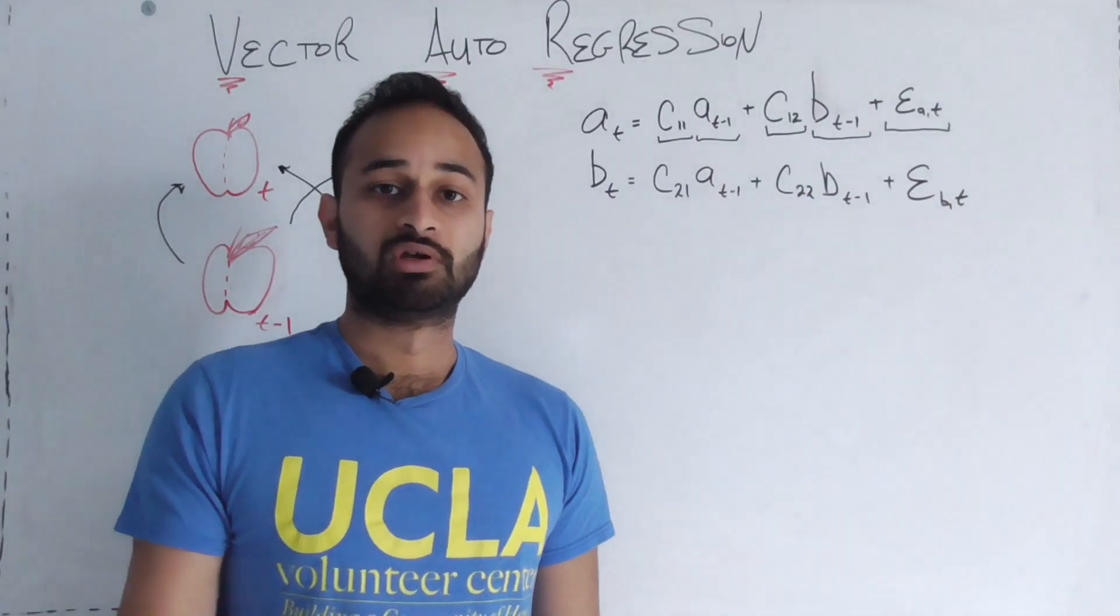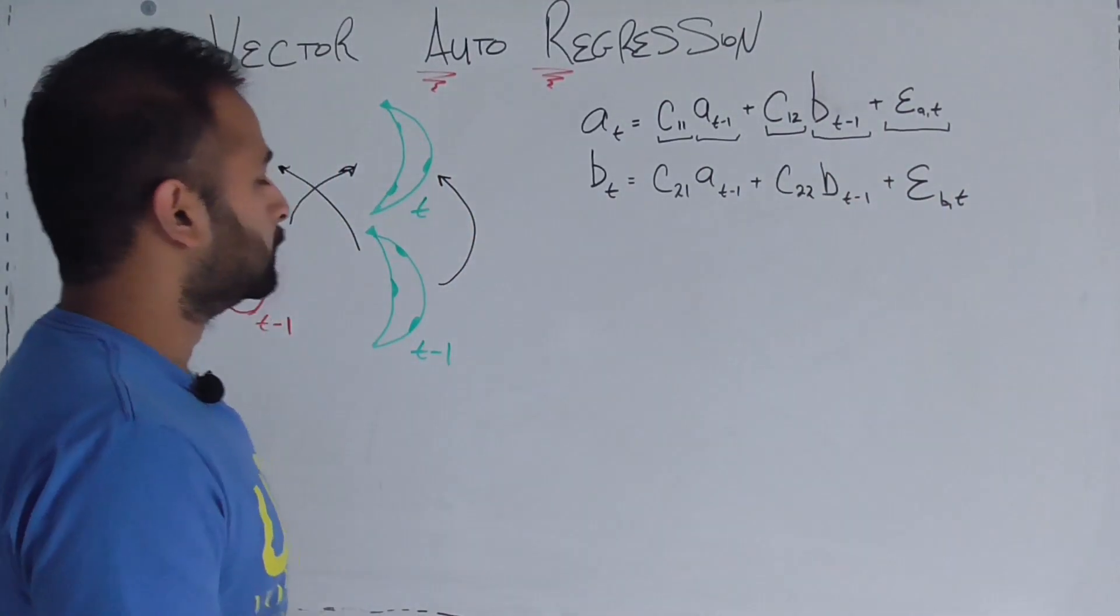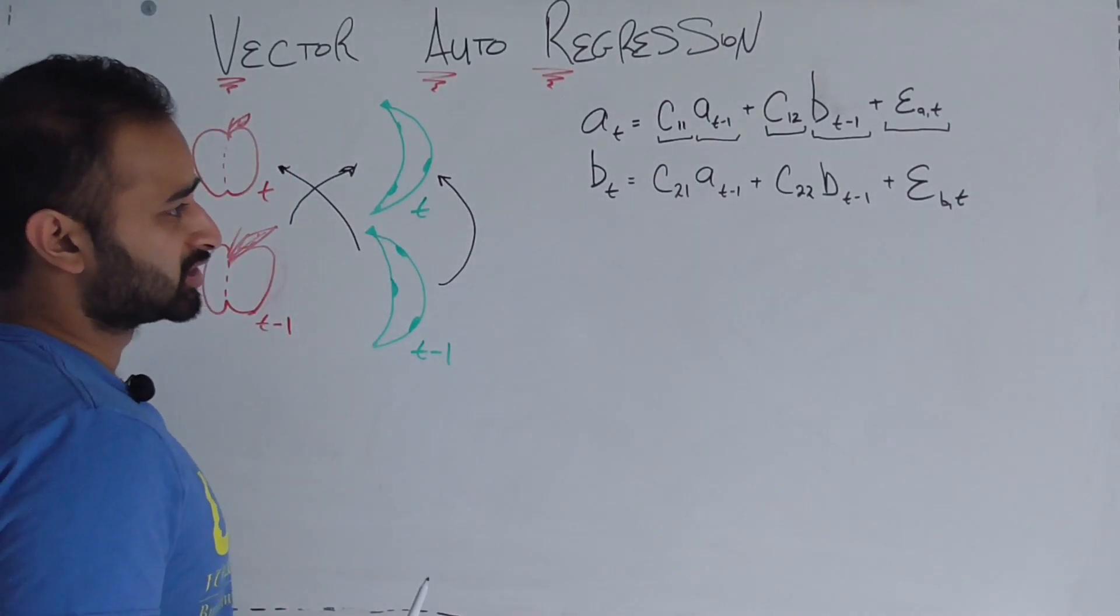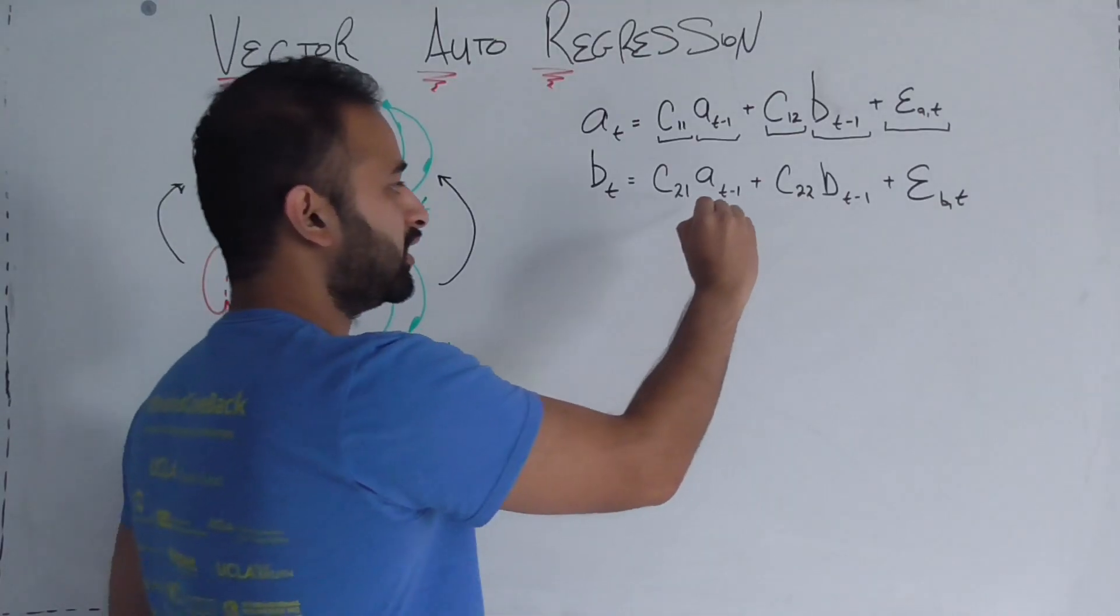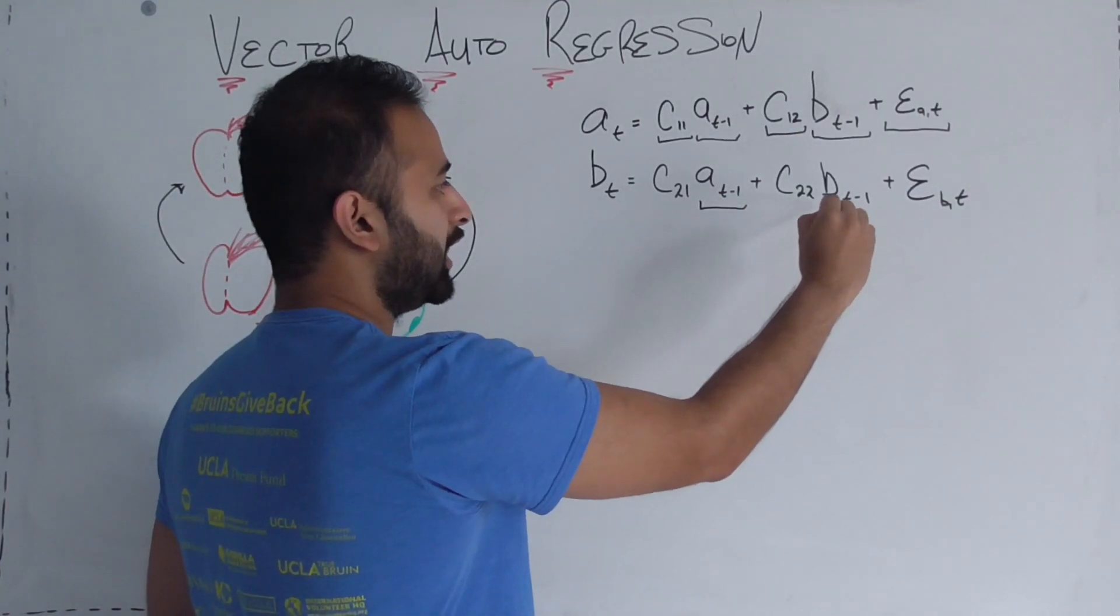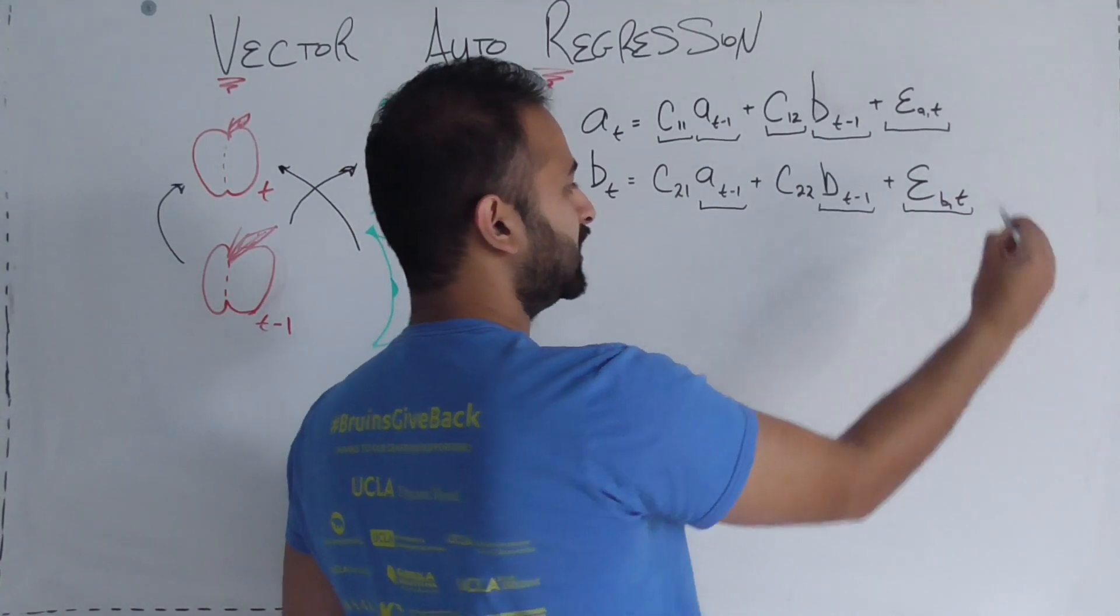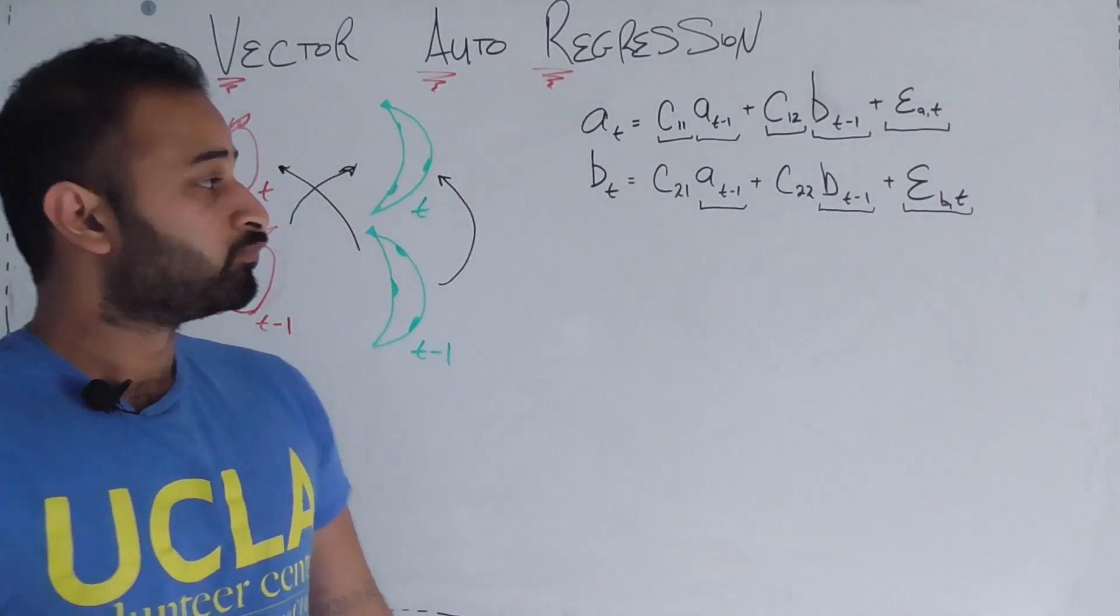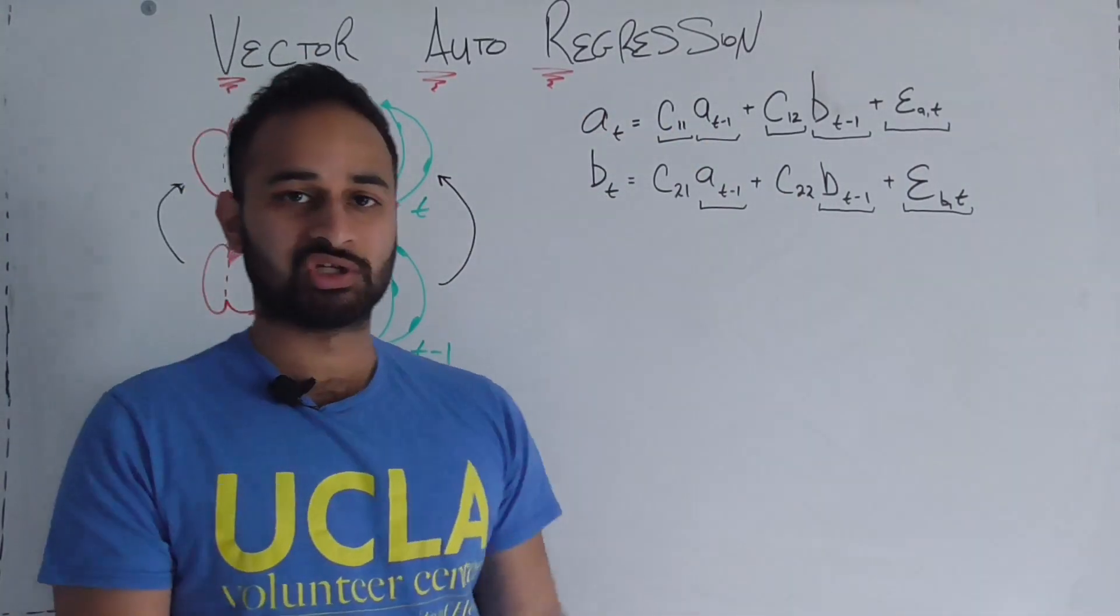And of course there's going to be an error because we're never fully correct. This error epsilon a,t is the error in the number of apples that you sold this month. The next equation is very similar: the number of bananas we sell this month is a function of the number of apples we sold last month and the number of bananas we sold last month, and it has its own error epsilon b,t.